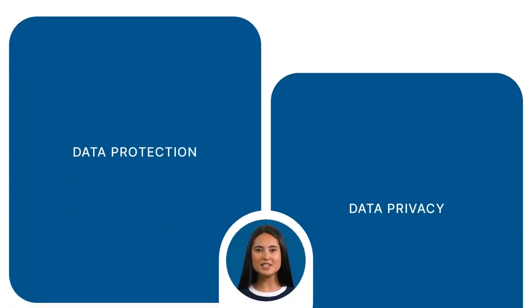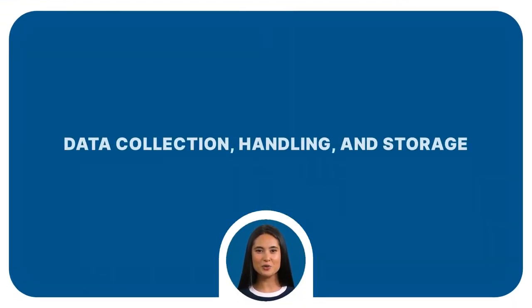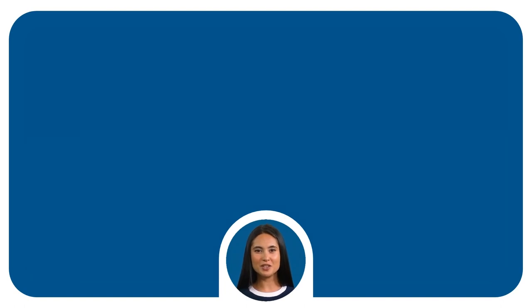Data protection and data privacy both fall under the category of data collection, handling, and storage. These are control mechanisms to ensure that data doesn't fall into the wrong hands. However, there are differences between these two terms that you should be aware of.